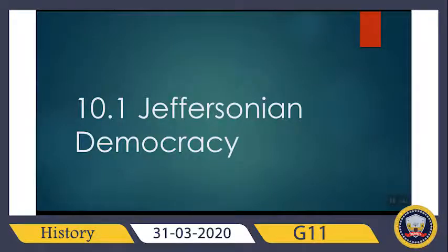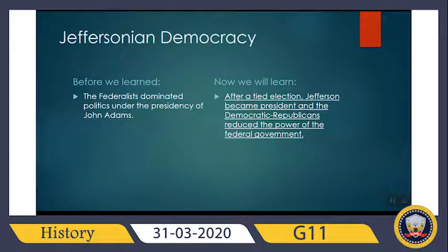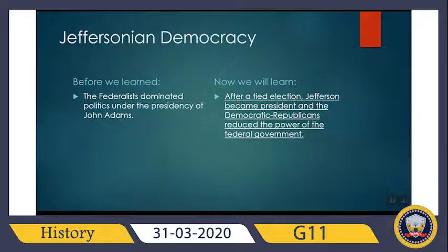Hello friends, we are back with the first section of Chapter 10, Jefferson's period. As you studied, Jefferson won the presidency after a very hotly debated election. In the previous lessons we studied about the Federalists and how they dominated politics under the presidency of John Adams, the second president of the United States. Today, we are going to focus on what happens after President Jefferson takes office and how the Democratic Republicans reduce the power of the federal government.